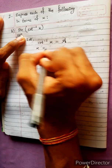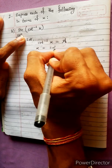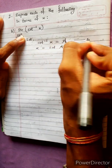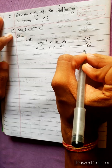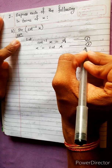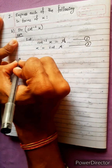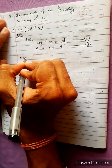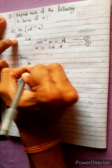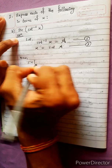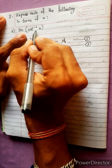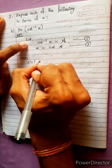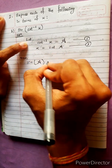So x equals to cot a — this is Line 1. Now our question asks: sin(cot inverse x). Since cot inverse x equals a, this becomes sin(a). This is Line 2.